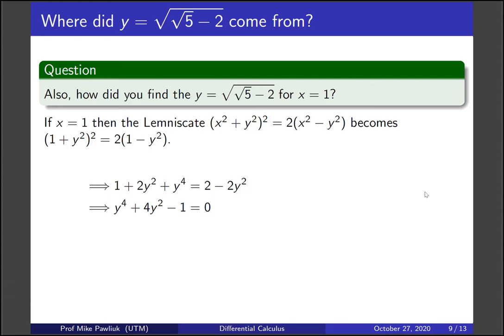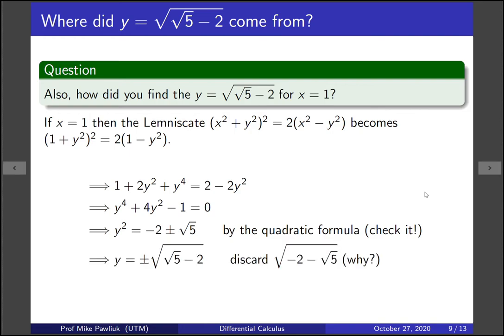Do you know how to isolate for y now? Well in this case we can use the quadratic formula. And if you use the quadratic formula you get that y² is this. You should check it on your own. Make sure I didn't make a computation error. So then this lets us solve for y by taking the square root. So y = ±√(√5 - 2).